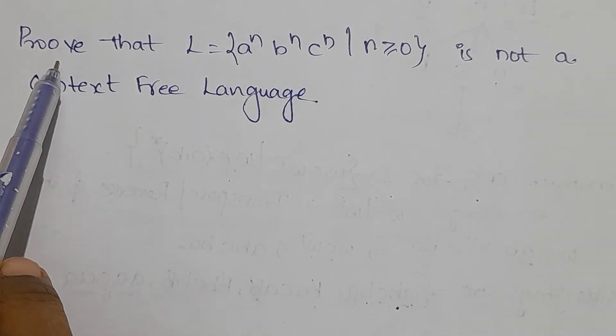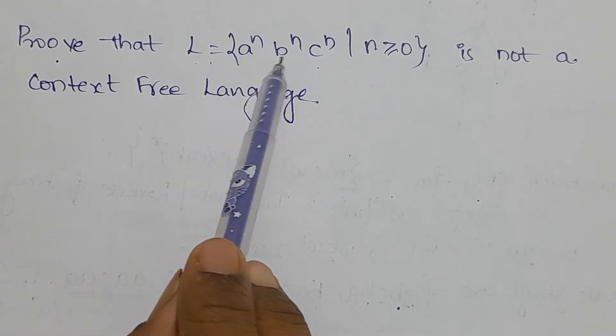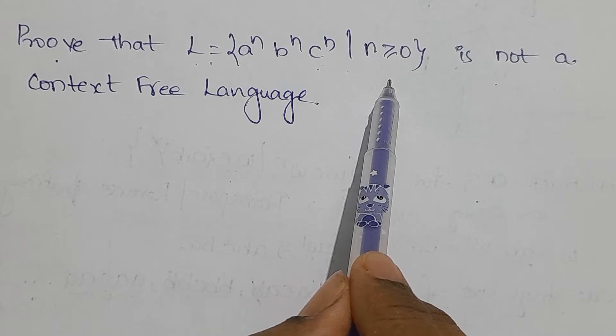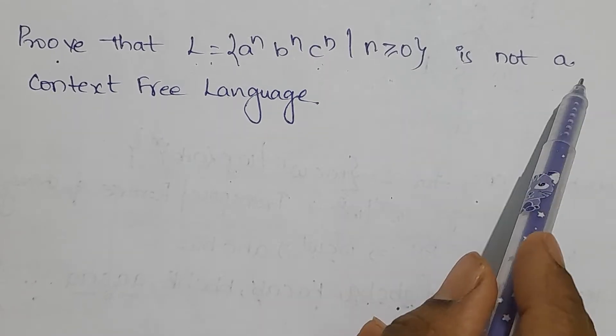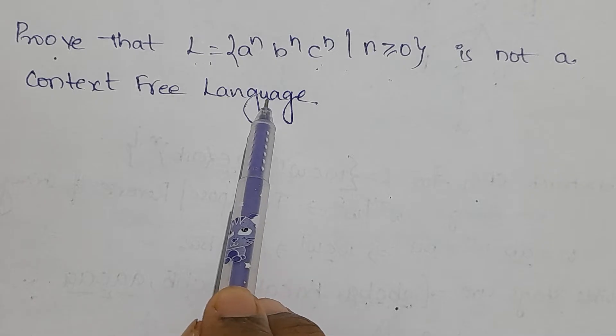Now, we will prove that the given language L = {a^n b^n c^n | n ≥ 0} is not a context-free language.